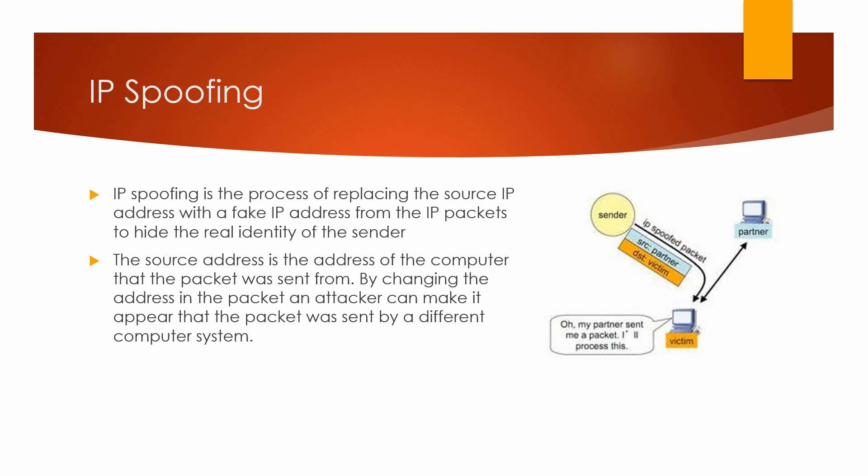For example, let's take a look at this image on the right. Here we have a partner who's communicating with a victim. Then we have the sender who's the attacker. Notice that he IP spoofs the packet and changes the source to the partner and the destination to the victim. So the victim thinks that he's talking with a partner, but actually he's talking to the sender who is the attacker.